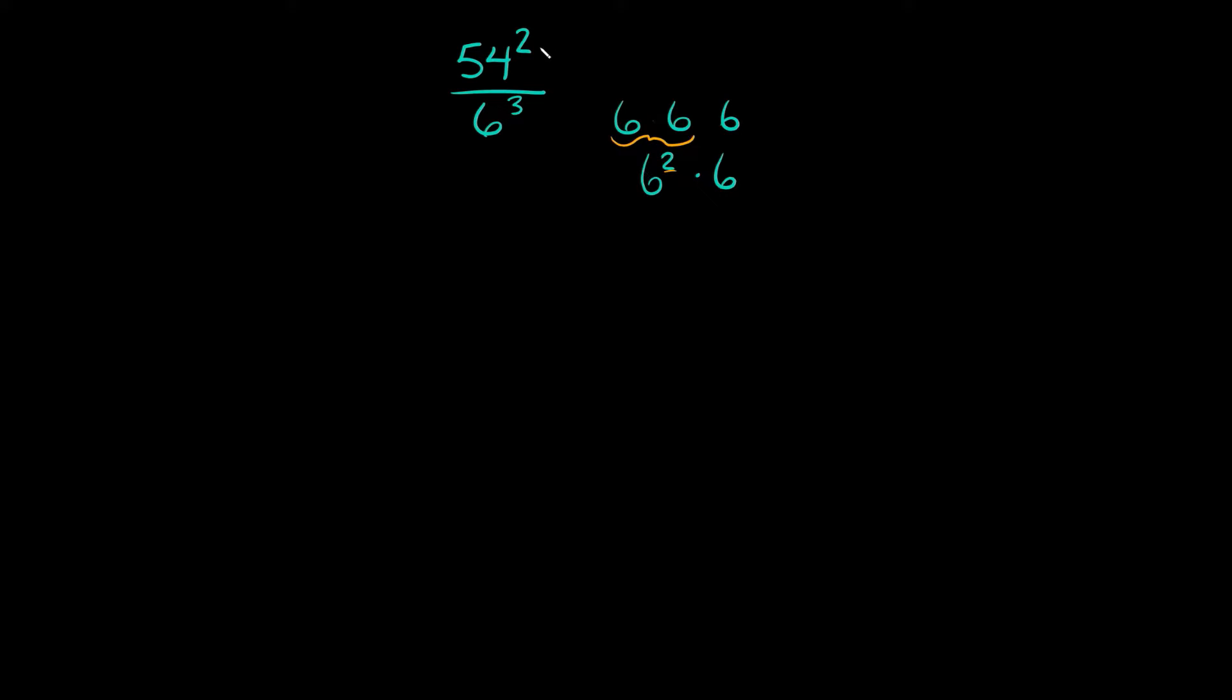Now as you can see, we have the same exponent, a 2 and a 2. So that's how I'm going to rewrite the denominator. So here, rewriting the whole problem, we have 54 squared over 6 squared times 6.